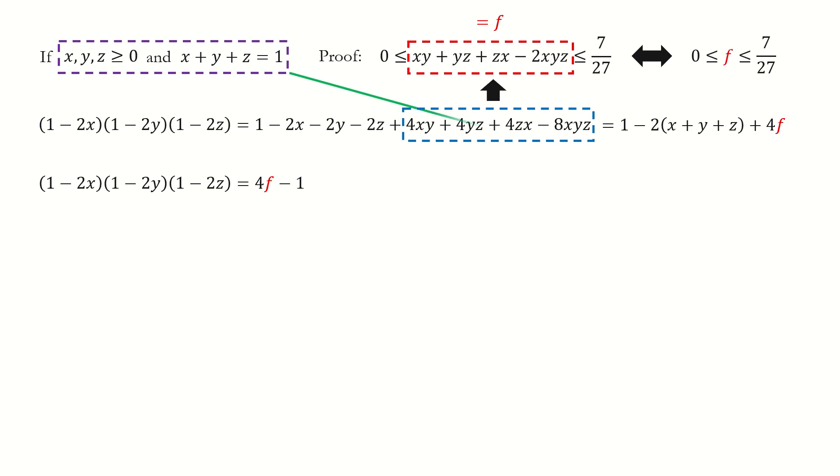Note for this condition, from here we got x, y, z are between 0 and 1. So we got the lower and upper bound for these three terms, and the product of these three terms is greater than or equal to minus 1.